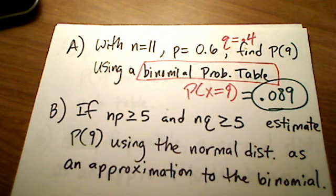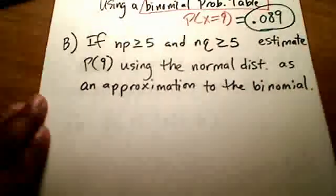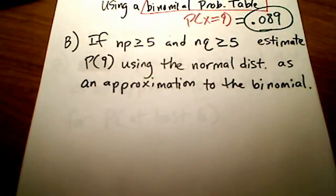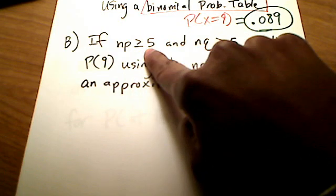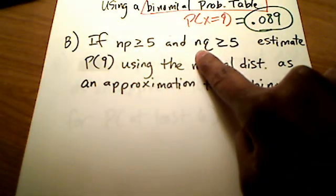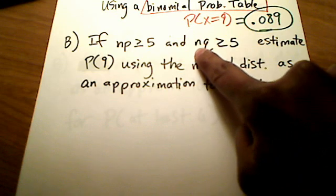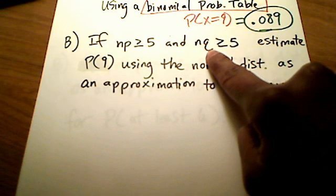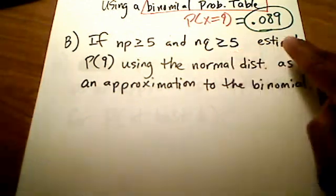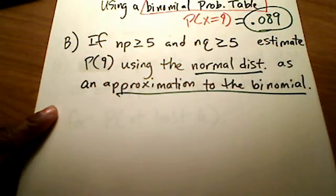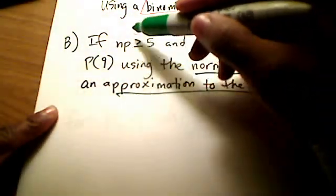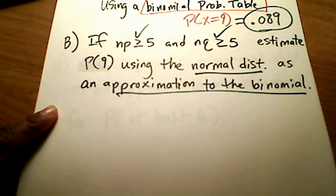Now for part B, as I pointed out, this is part two of a two-video set. Part B says: if the product n times p is greater than or equal to 5, and if the product n times q — the number of trials times the probability of failure — is also greater than or equal to 5, then I can use the normal distribution to approximate the binomial. Let's check these two conditions first, and if they both check out, I'll proceed.